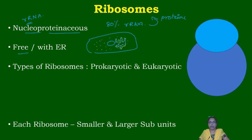There are two types of ribosomes: prokaryotic ribosomes and eukaryotic ribosomes. Prokaryotic ribosomes are called 70S type and eukaryotic ribosomes are called 80S type. 'S' stands for Svedberg units, which tells us how fast the particle gets sedimented in an ultracentrifuge.